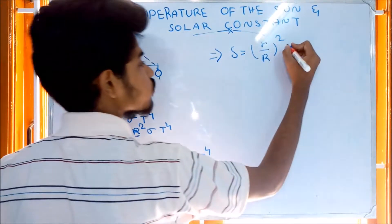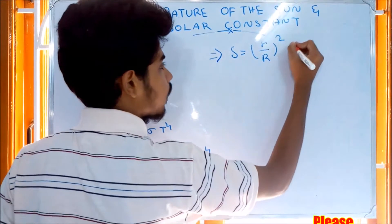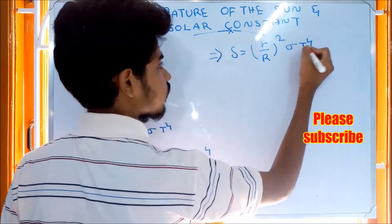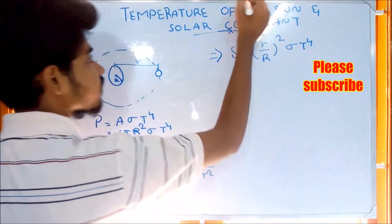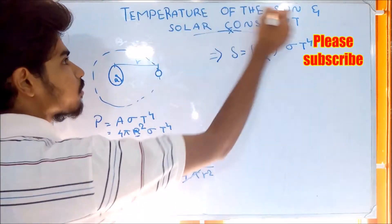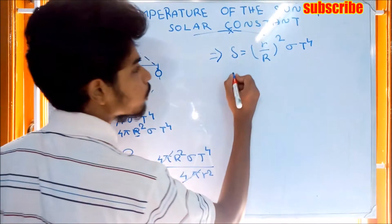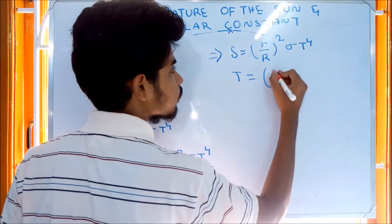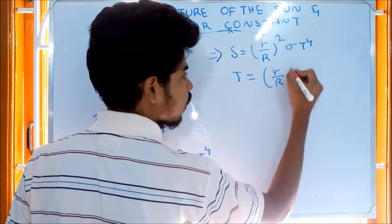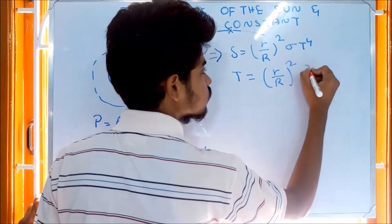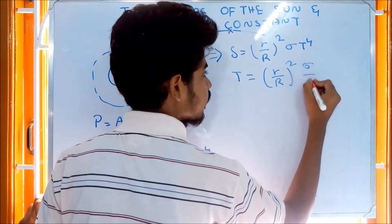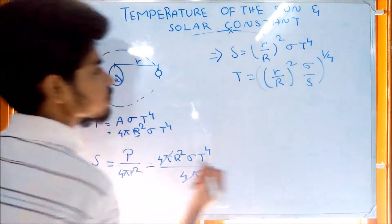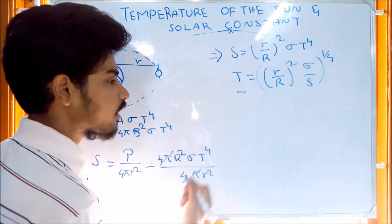So S is equal to (r divided by capital R) whole squared into sigma T to the power of 4. T to the power of 4 is the temperature of the sun. So T equals (r divided by capital R) whole squared into (S divided by sigma), whole to the power of 1 by 4. This is the temperature of the sun.